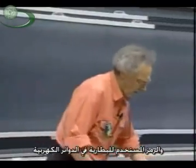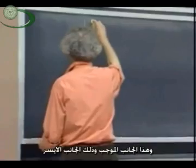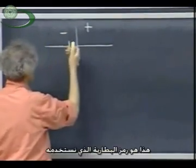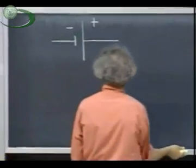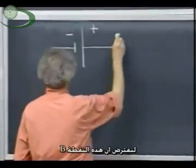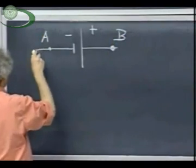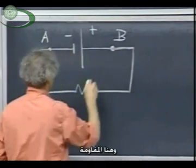The symbol for battery that we will be using in our circuits is this. This is the positive side and this is the negative side. This is a symbol that symbolizes that we're dealing with a battery. So let this point be B, and let this point be A.